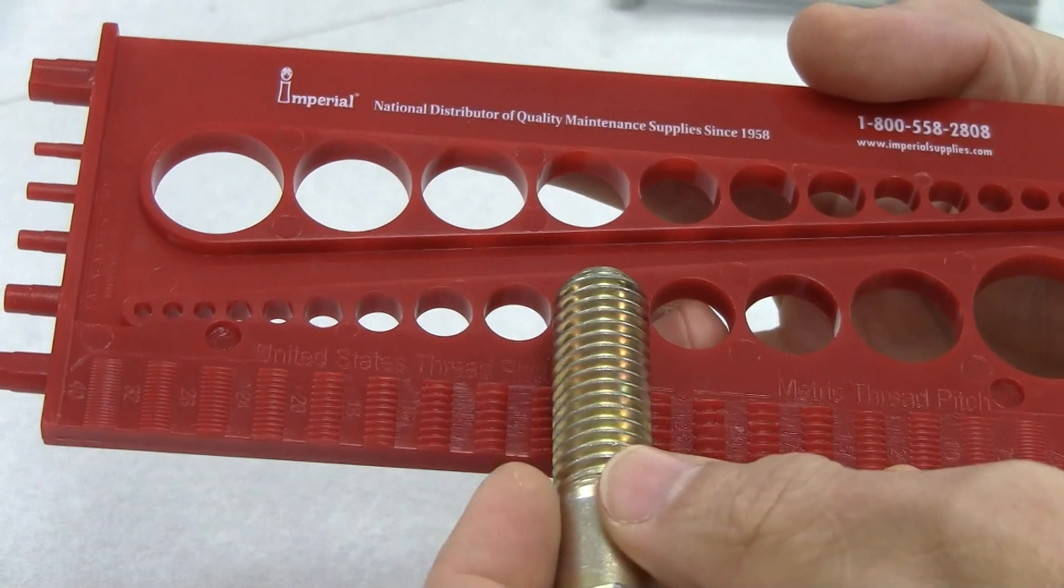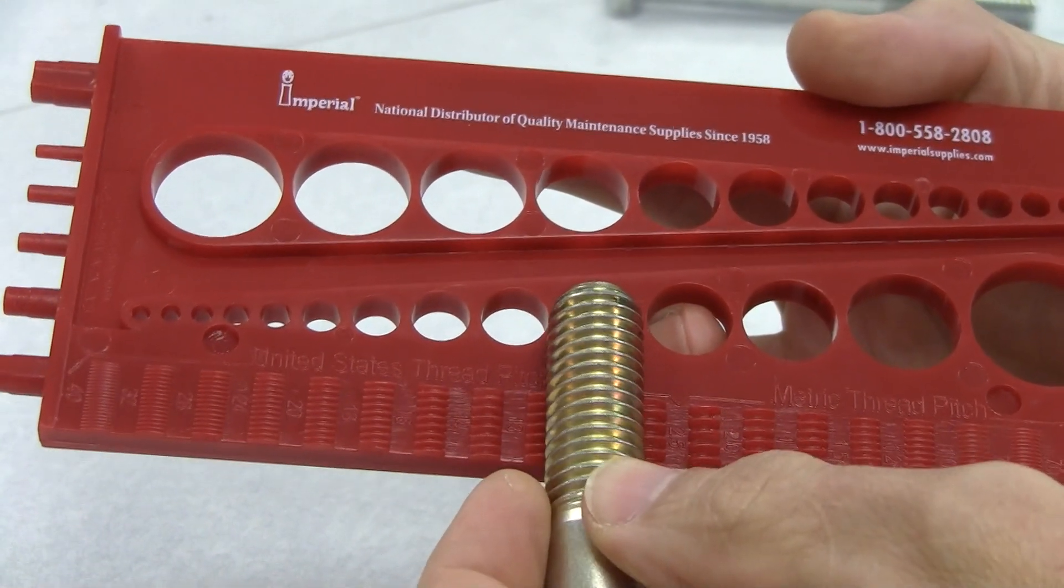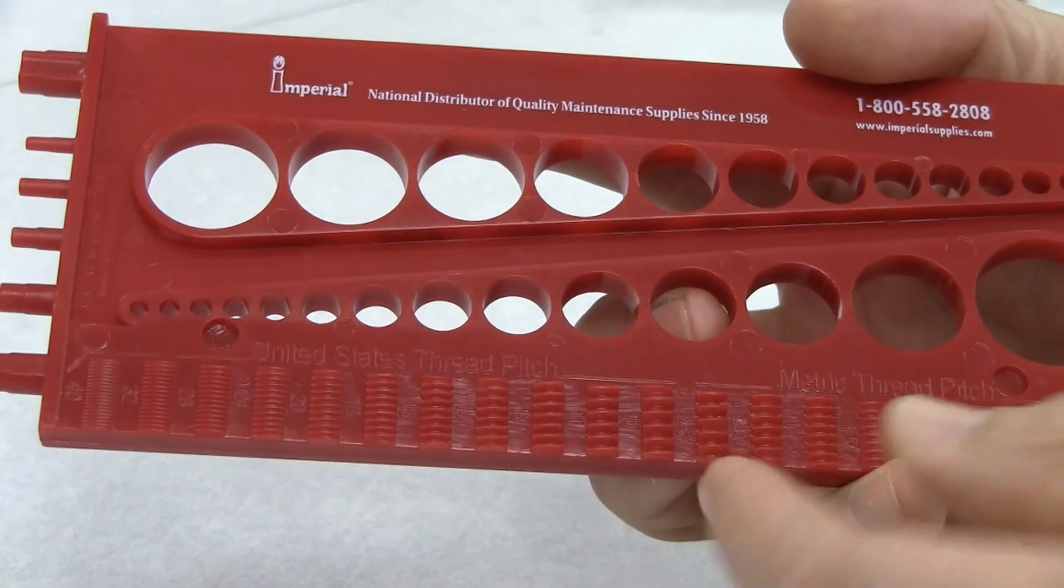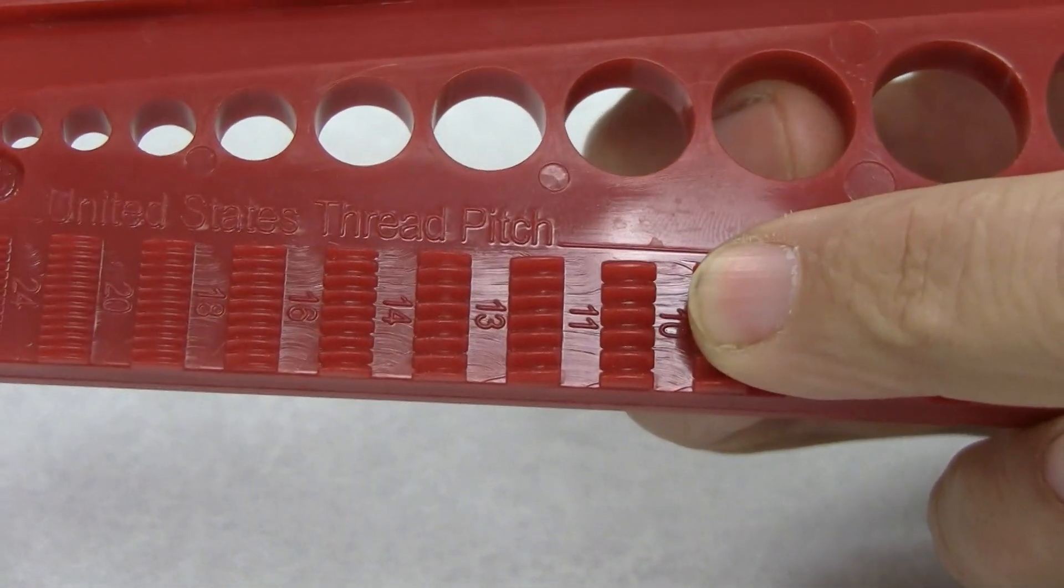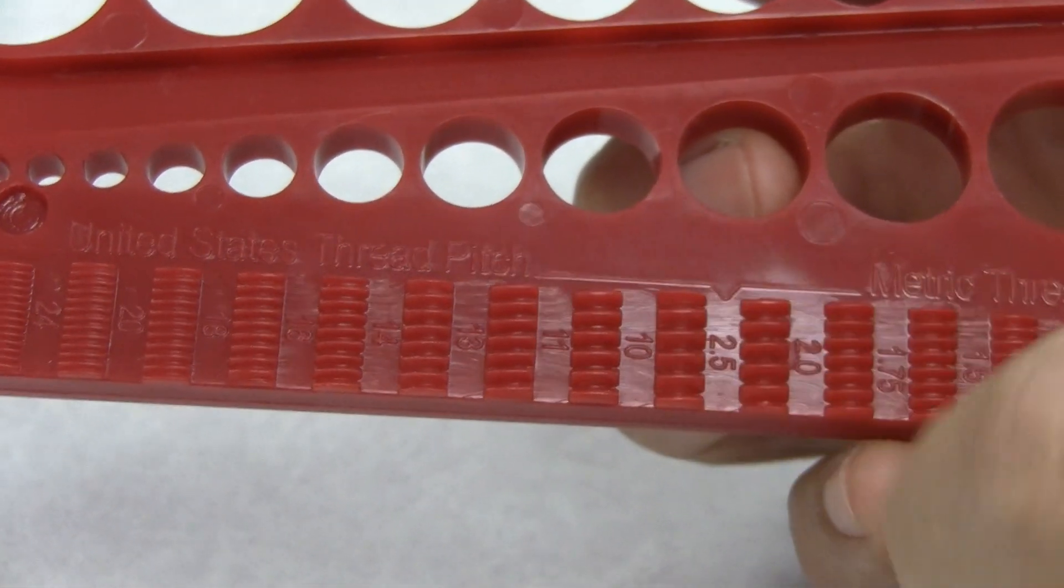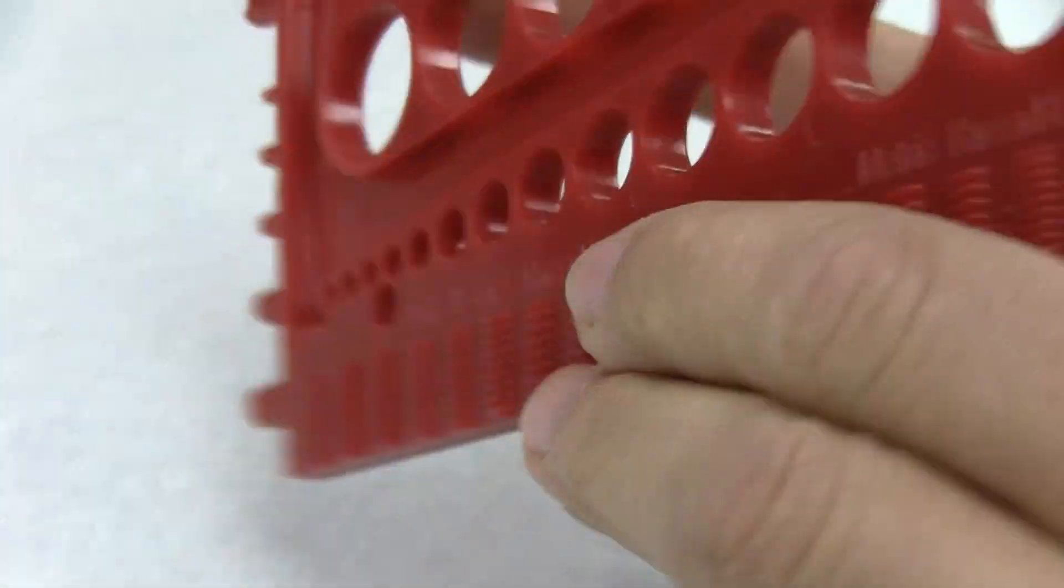You go from thread pitch to thread pitch until it locks into one, like it has now. I will then take and read my gauge, and you will notice that it says 11. That means that it's 11 threads per inch.